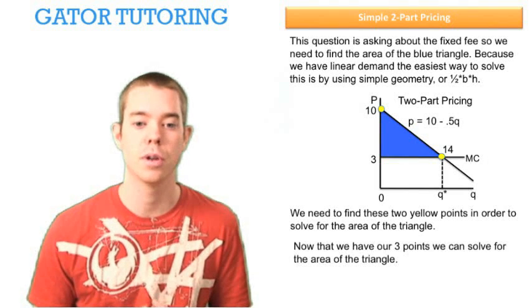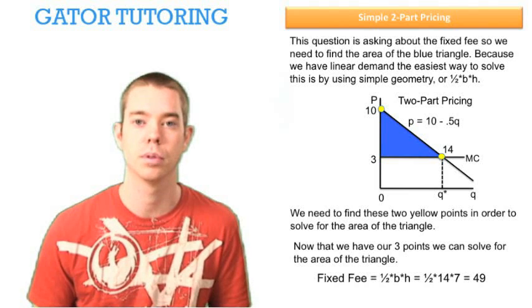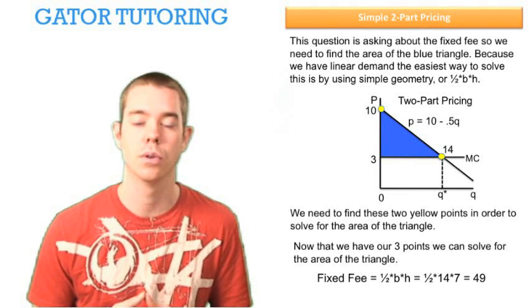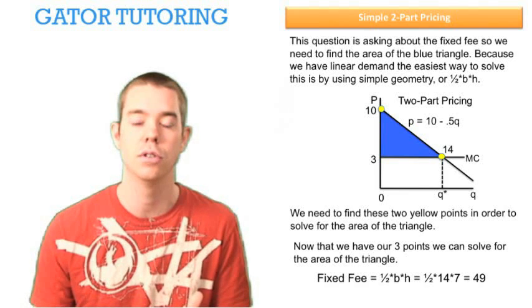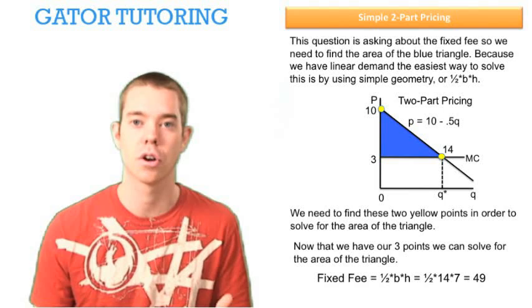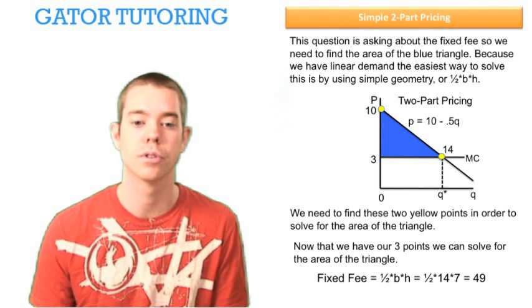So now we have our three points we can solve for the area of the triangle, which remember is simply base times height, which is equal to our fixed fee. So in this case, it's 1 half times 14, which is our base, 0 to 14 units, times 7, which is our height, because we went from $3 to $10, and we found that our fixed fee is equal to 49.